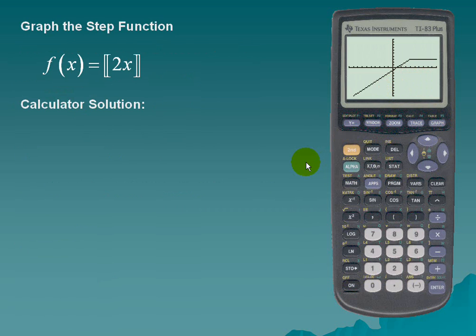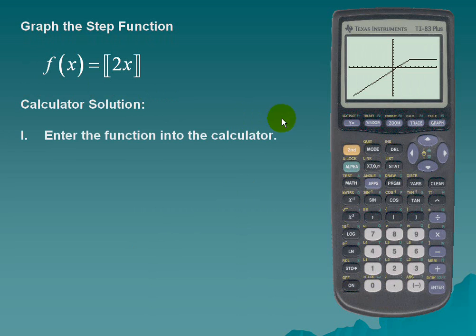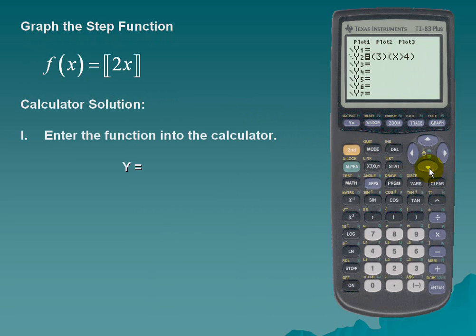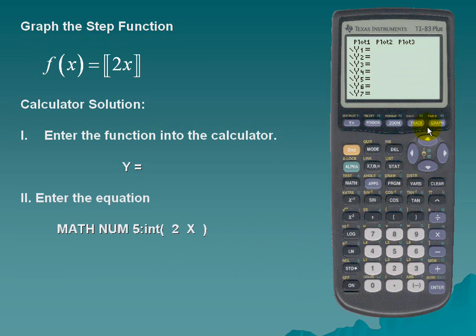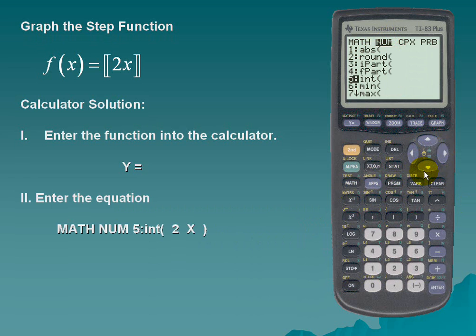Next we'll graph the step function: f(x) is equal to the greatest integer of 2x. We'll enter the function into the Y= section and clear out our equations. The greatest integer function is located under MATH — scroll over to NUM, and the fifth choice is the greatest integer function. It provides an opening parenthesis. Simply place in 2x and close the parentheses.